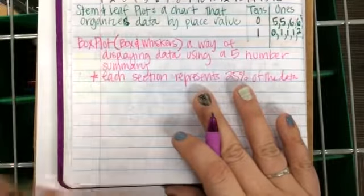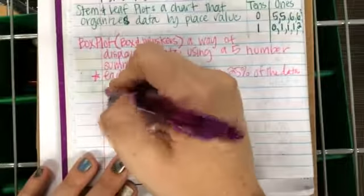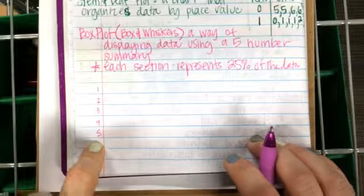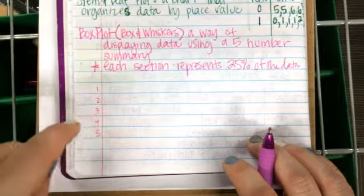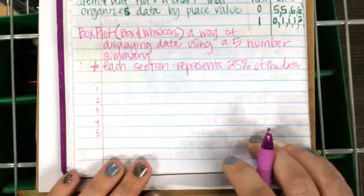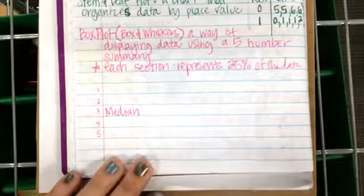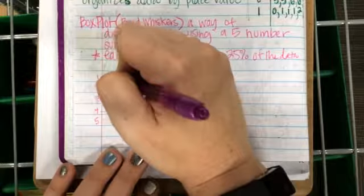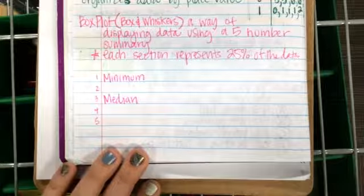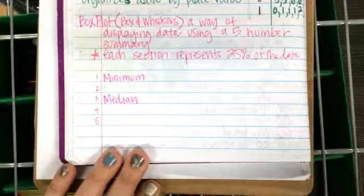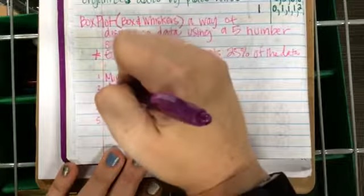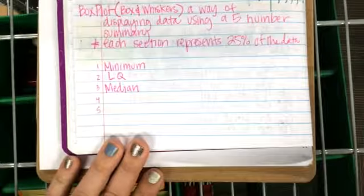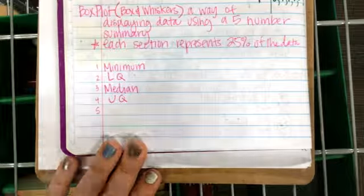What are the five pieces of data in a five-number summary? The median goes in the third position — the middle. The minimum is first. The lower quartile, or LQ, is second. The upper quartile is fourth. And the maximum is fifth. To find these, you should put your data in order first.